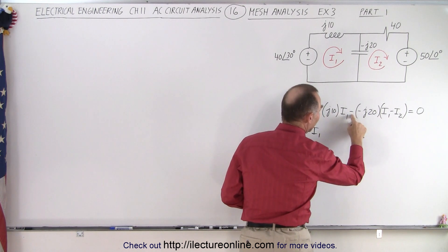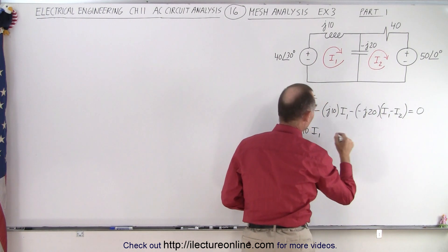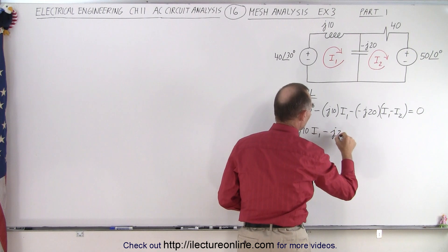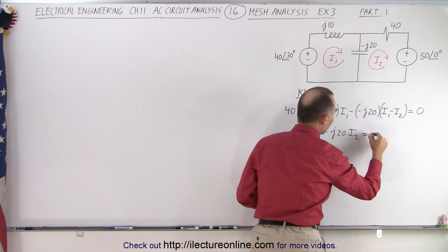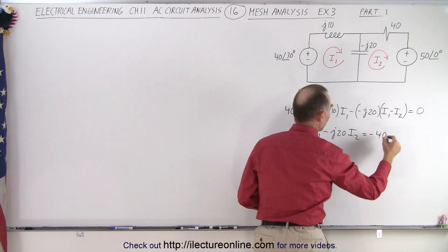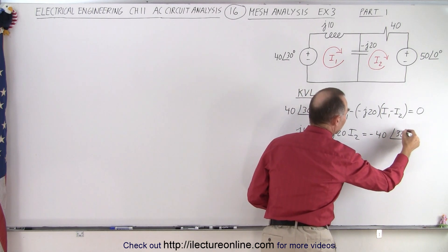For I2, we have a minus times a minus times a minus. That's minus J20 times I2. And then bringing this over to the right side, that becomes equal to minus 40 with a phase angle of 30 degrees.